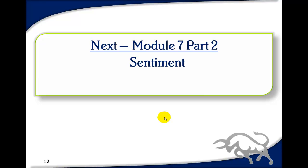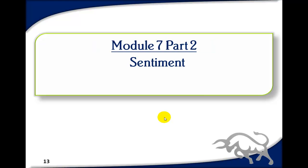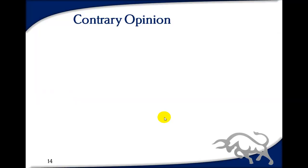The second part of module seven will be shorter — we're going to be talking about sentiment indicators. Sentiment is basically a contrary opinion. This is psychological — it has nothing to do with math. In fact, trading is rarely a purely mathematical thing; it's only used mathematically to work out things like oscillators and moving averages.